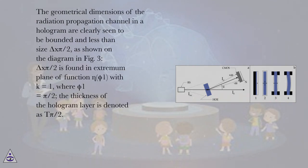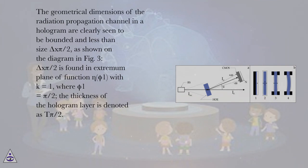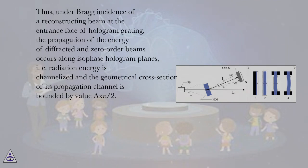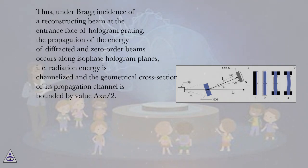The geometrical dimensions of the radiation propagation channel in a hologram are clearly seen to be bounded and less than size δ(π/2), as shown in figure 3. δ(π/2) is found in the extremum plane of function η(φ₁) with k = 1, where φ₁ = π/2, and the thickness of the hologram layer is denoted as π/2. Thus, under Bragg incidence of a reconstructing beam at the entrance face of the hologram grating, the propagation of energy of diffracted and zero-order beams occurs along isophase hologram planes — i.e., radiation energy is channelized and the geometrical cross-section of its propagation channel is bounded by value δ(π/2).